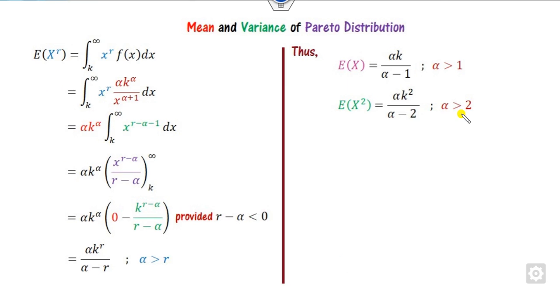Now once you find this expected value of X raised to power r, you can substitute r is 1. This is for r is 1 and this is for r is 2. You can see alpha is greater than 1 for E(X). This is the mean of the Pareto distribution.